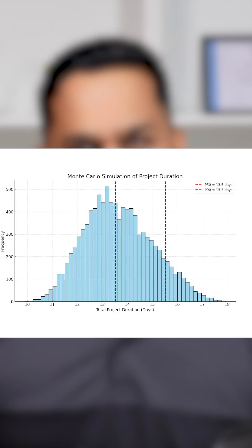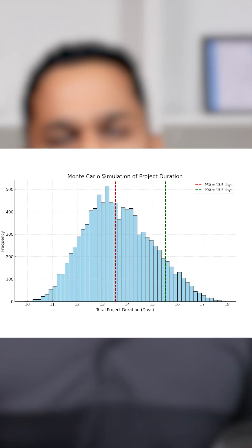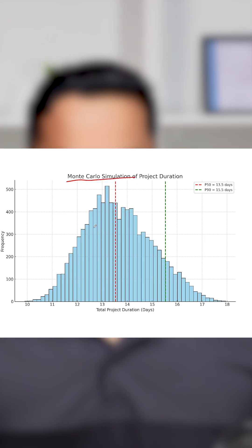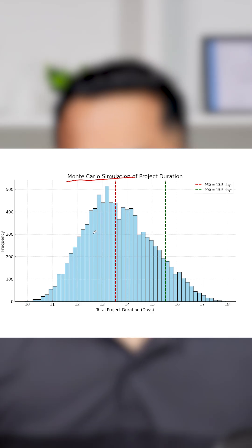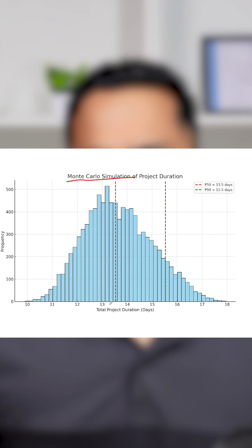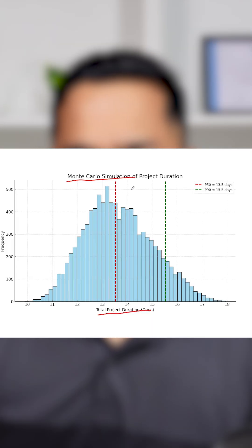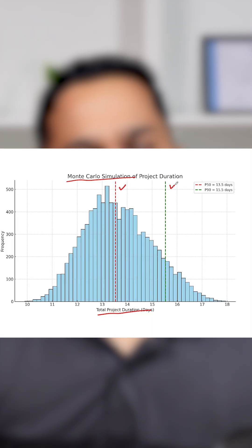What you see on screen currently is a chart that shows an output of a Monte Carlo simulation. If you look at this histogram, you will see that we are trying to estimate the total project duration. The software ran around 10,000 simulations to give us an understanding of when our project might finish. You see two lines here — one is a red line and another is a green line.